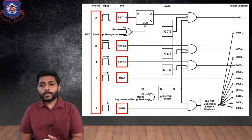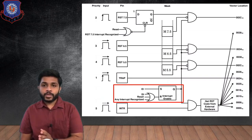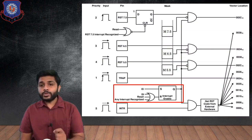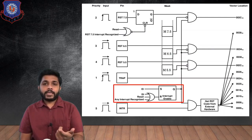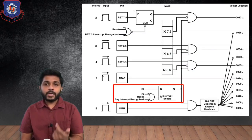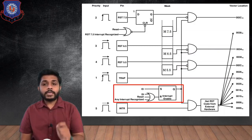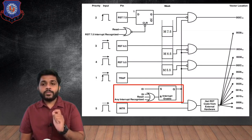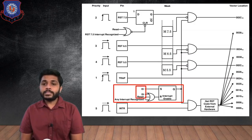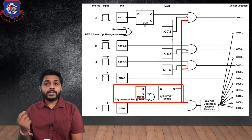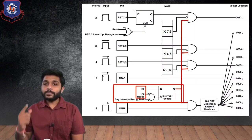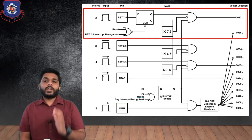If we want to use any interrupt apart from TRAP, we have to use the interrupt enable flip-flop. The input to this flip-flop is the EI bit. When EI bit is 1, the interrupt enable flip-flop will be set. The output of the interrupt enable flip-flop is given to the AND gates — if any input of an AND gate is 0 we get 0 at the output, and if all inputs are 1 we get 1 at the output.